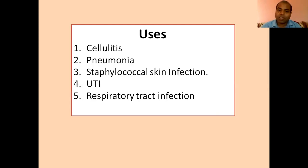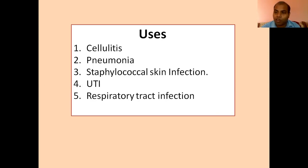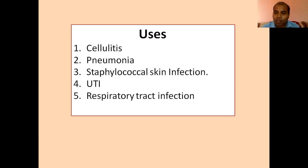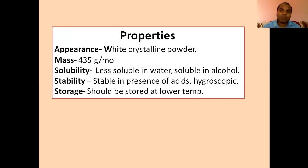Cloxacillin is used for cellulitis, which is a skin infection caused by bacteria. It is also available for the treatment of pneumonia caused by Streptococcus pneumoniae, staphylococcal skin infections, urinary tract infections such as E. coli infection, and other gram negative bacterial infections. Streptococcal respiratory tract infections are also treatable with cloxacillin.